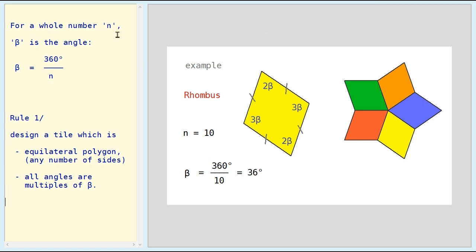For a whole number n, beta is the angle so that beta is 360 degrees divided by n. So rule number one: design a tile which is an equilateral polygon, as we discussed, but all angles are multiples of beta.